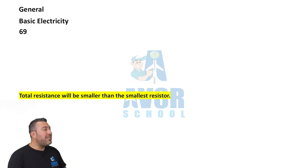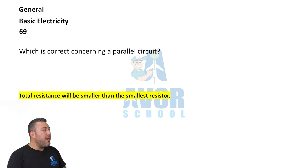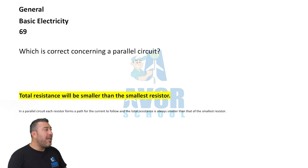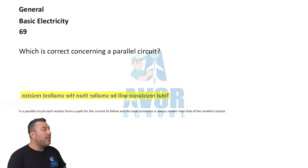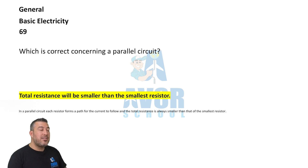69: What is correct concerning a parallel circuit? Total resistance will be smaller than the smallest resistor.